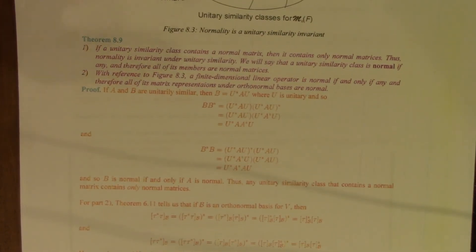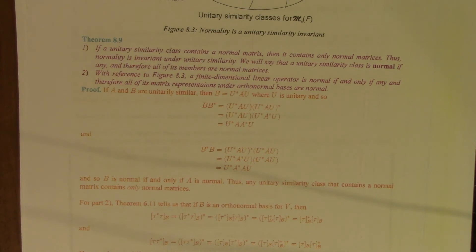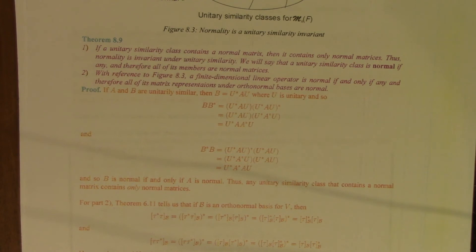In case there's a little confusion, I should mention another way we could have done this: we could have defined normality for matrices that commute with their own adjoint, shown that it's invariant under unitary similarity, said the unitary similarity class is normal if and only if it contains one and therefore all normal matrices, and then said that an operator is normal if it is represented by normal matrices under orthonormal ordered bases. That's the pattern we've used in the past — for example, that's how we define the characteristic polynomial of an operator.